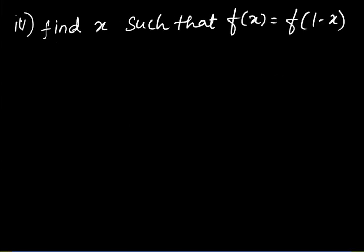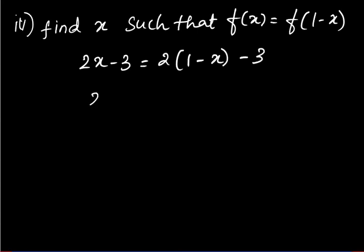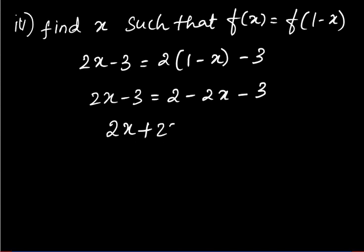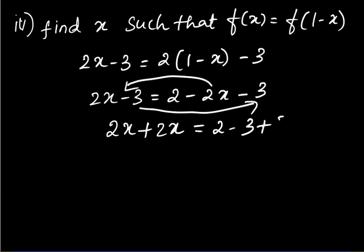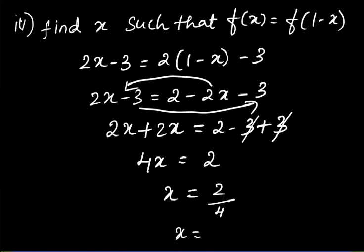Fourth part of Q6: find x such that f(x) = f(1−x). f(x) = 2x − 3. For f(1−x), replace x with (1−x): 2(1−x) − 3 = 2 − 2x − 3. Setting them equal: 2x − 3 = 2 − 2x − 3. Grouping x-terms: 2x + 2x = 2 − 3 + 3, so 4x = 2, giving x = 1/2.